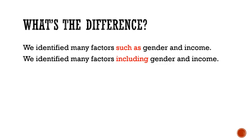Let's look at another example: 'We identified many factors such as — or including — gender and income.' Again, is the writer trying to simply give an example, or does she want to highlight the two most important ones in this study? If gender and income are the most important or the focus of the study, then the writer should use 'including' to highlight those two factors.